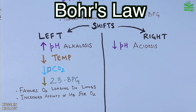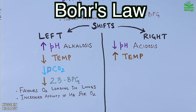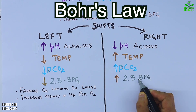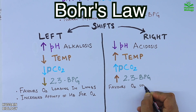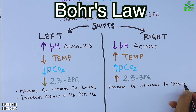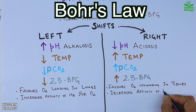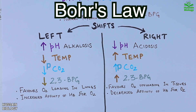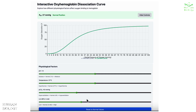For a right shift, we need low pH (acidosis), high temperatures, high PCO2, and high levels of 2,3-BPG. These factors favor O2 unloading in tissues and decrease the affinity of hemoglobin for oxygen, shifting the curve to the right.